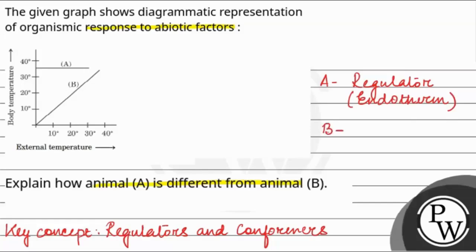Whereas organism B is a conformer because with external temperature change, their internal body temperature also varies. And they are also called ectotherms. Hope you understood it well, best of luck.